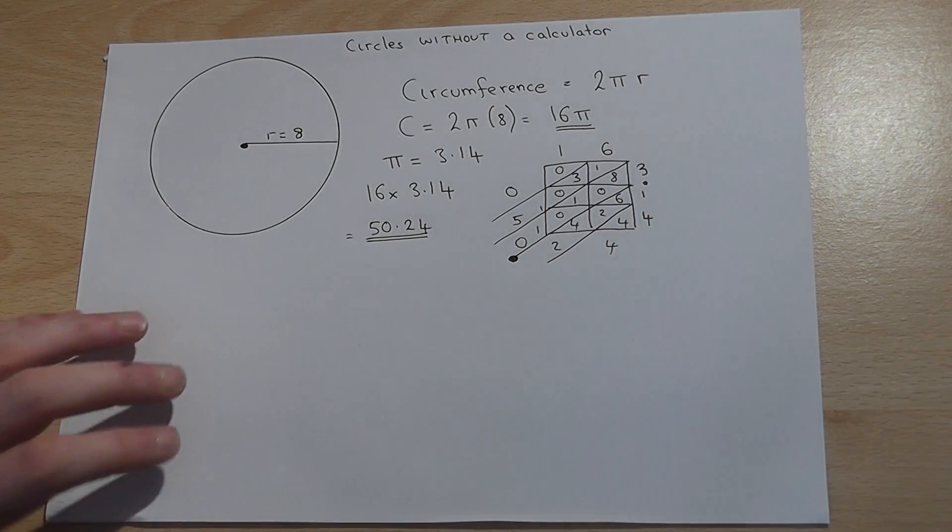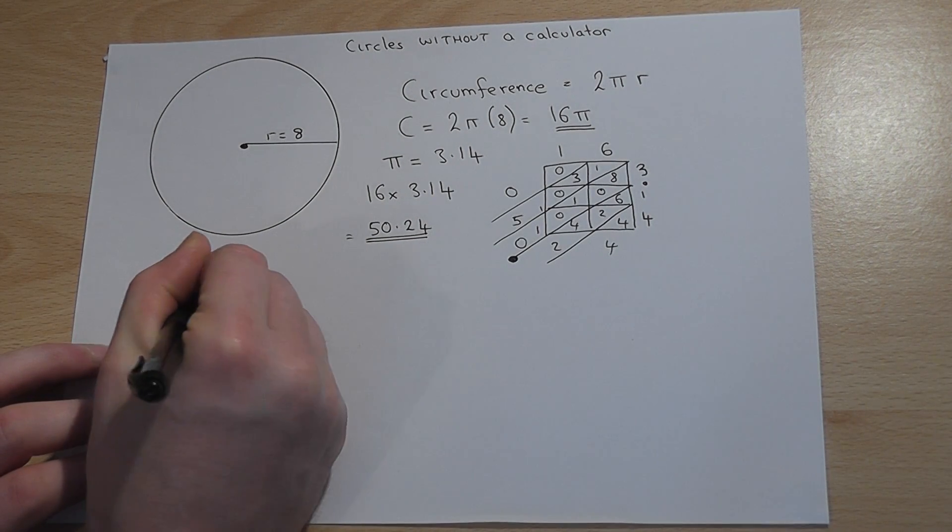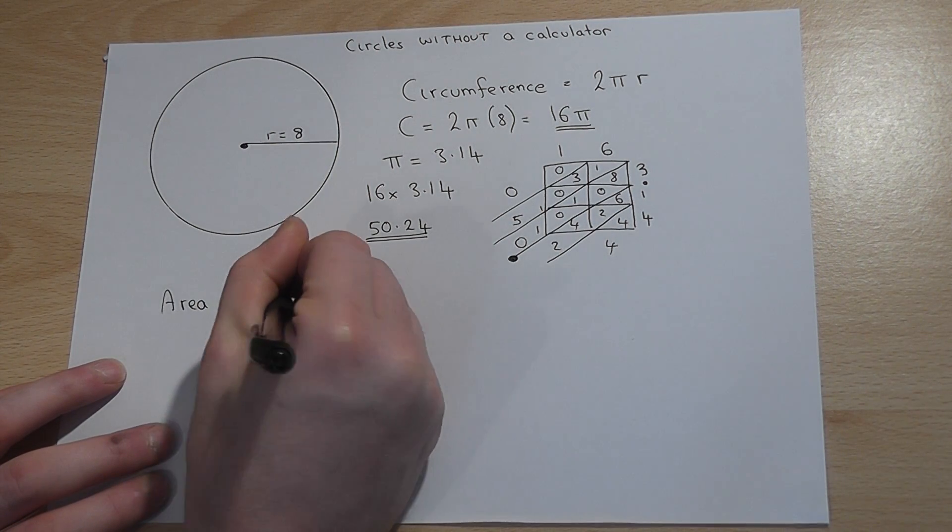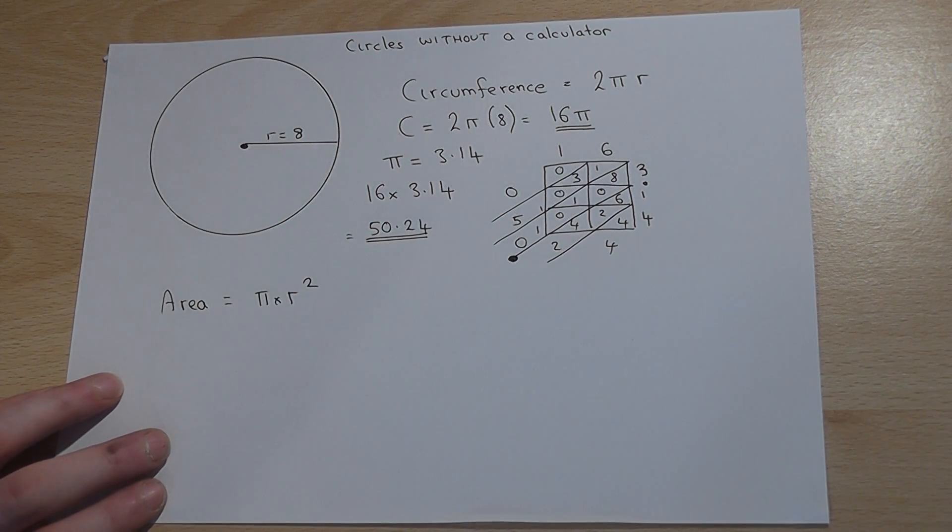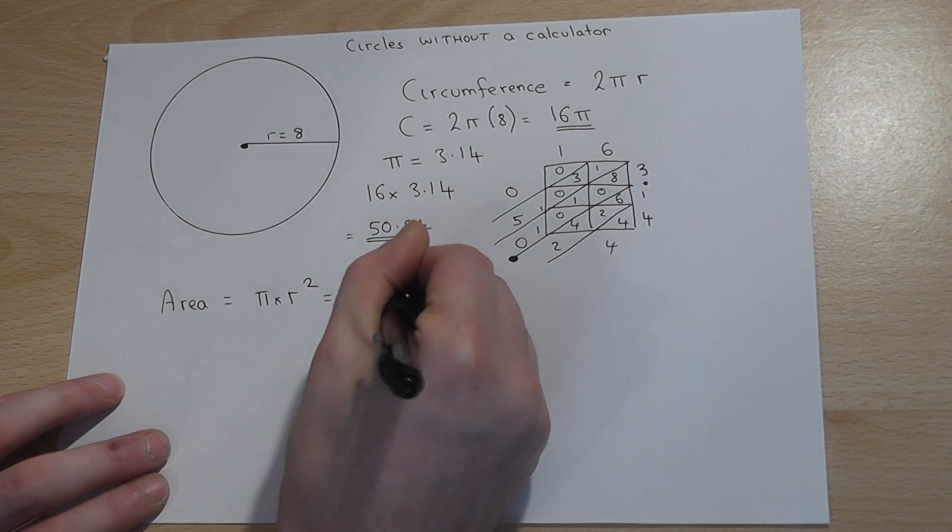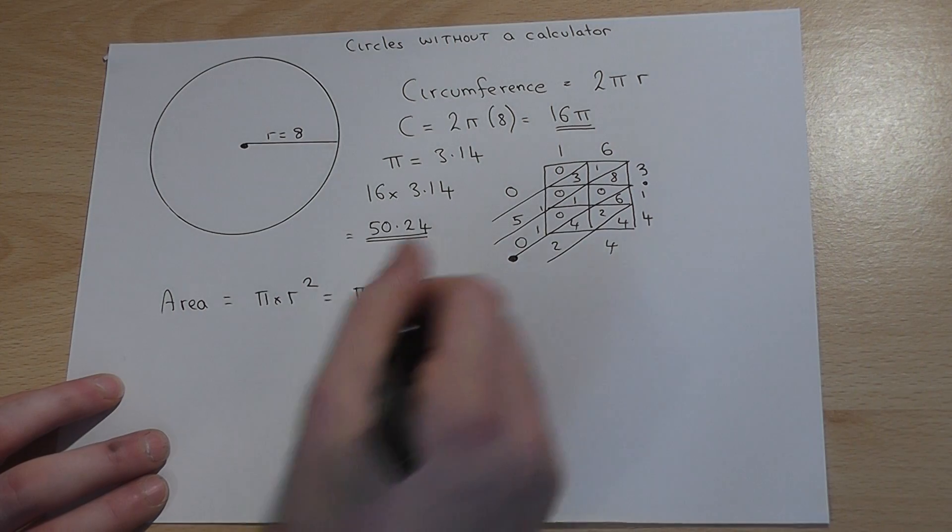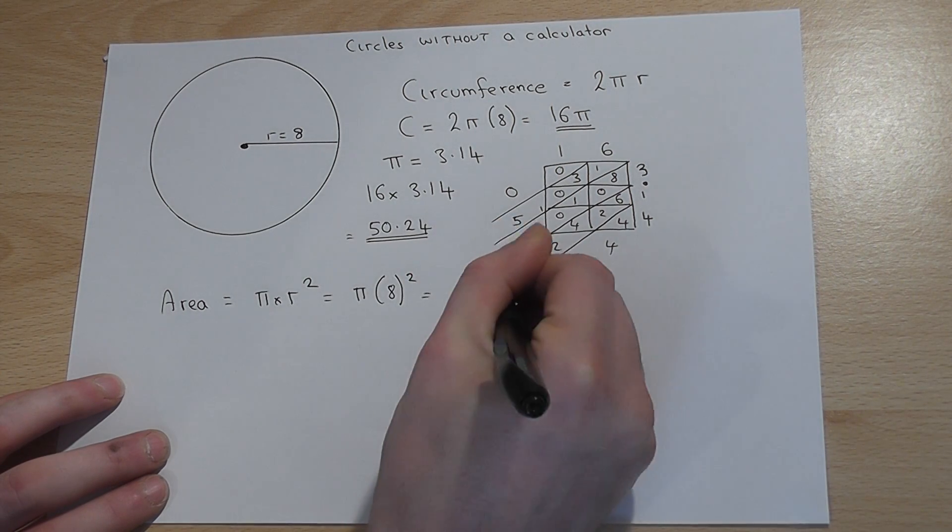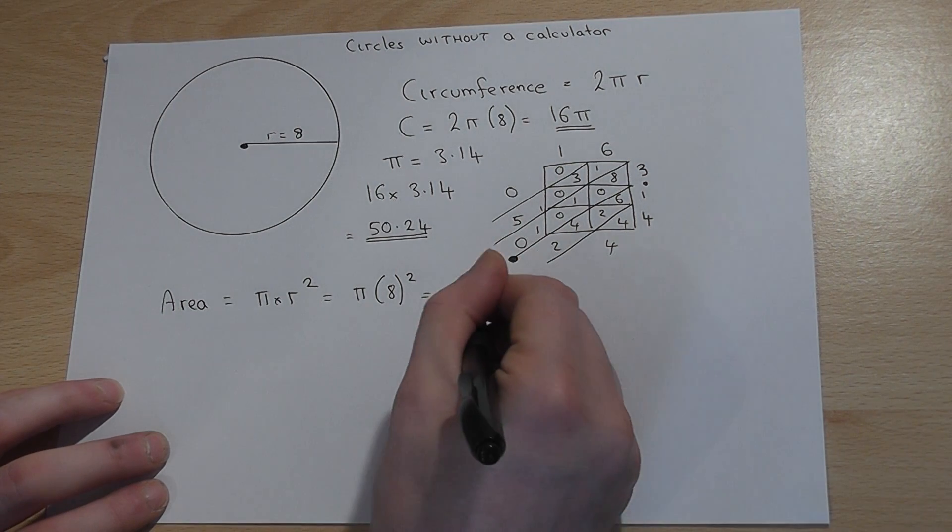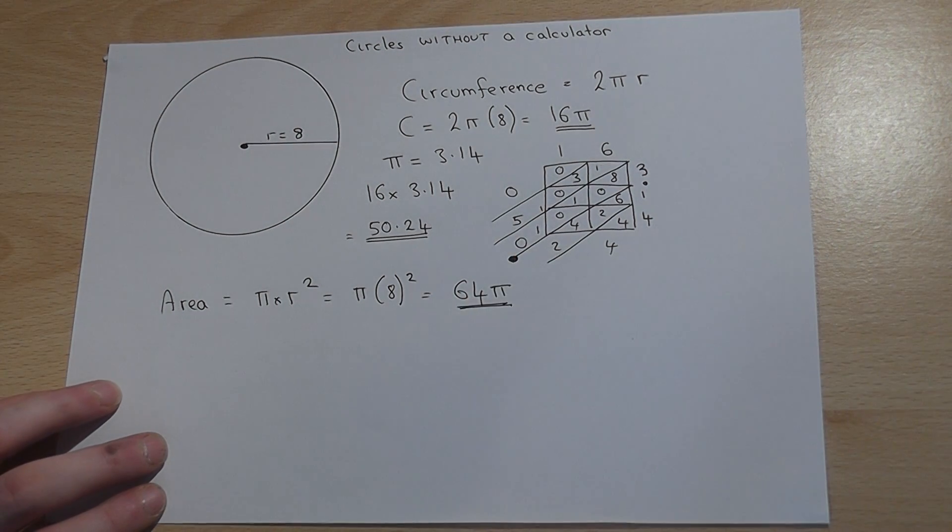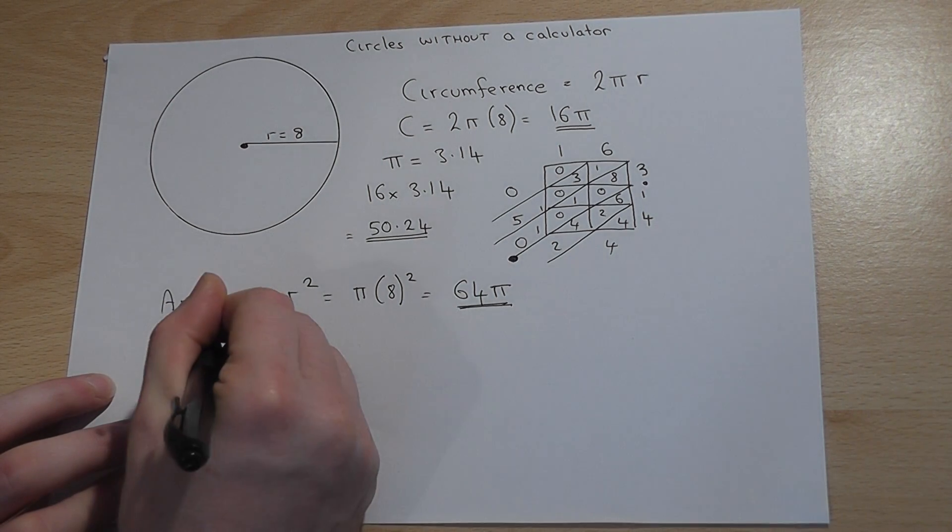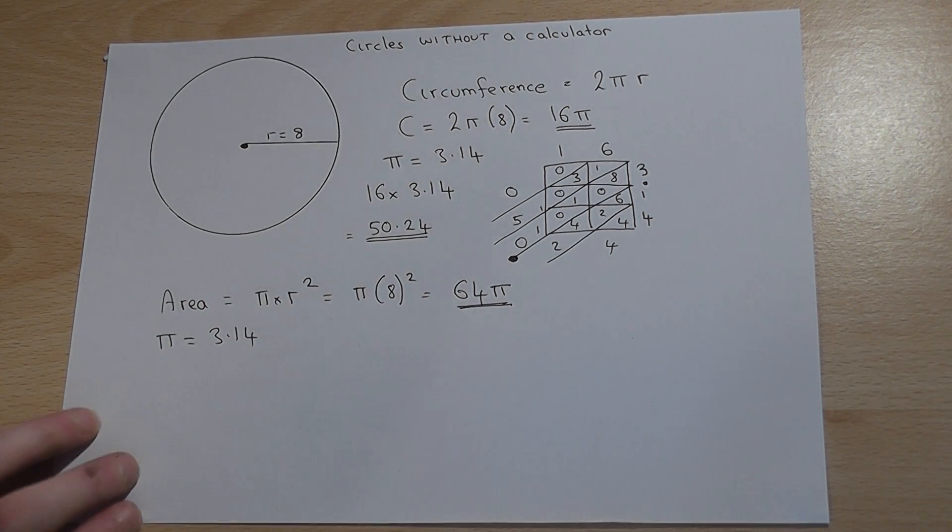For the area, we know the formula is π times radius squared. Our radius equals 8. 8 squared equals 64, so 64π. That's in terms of π. However, once again, it could say to us, suppose π equals 3.14 to 2 decimal places.